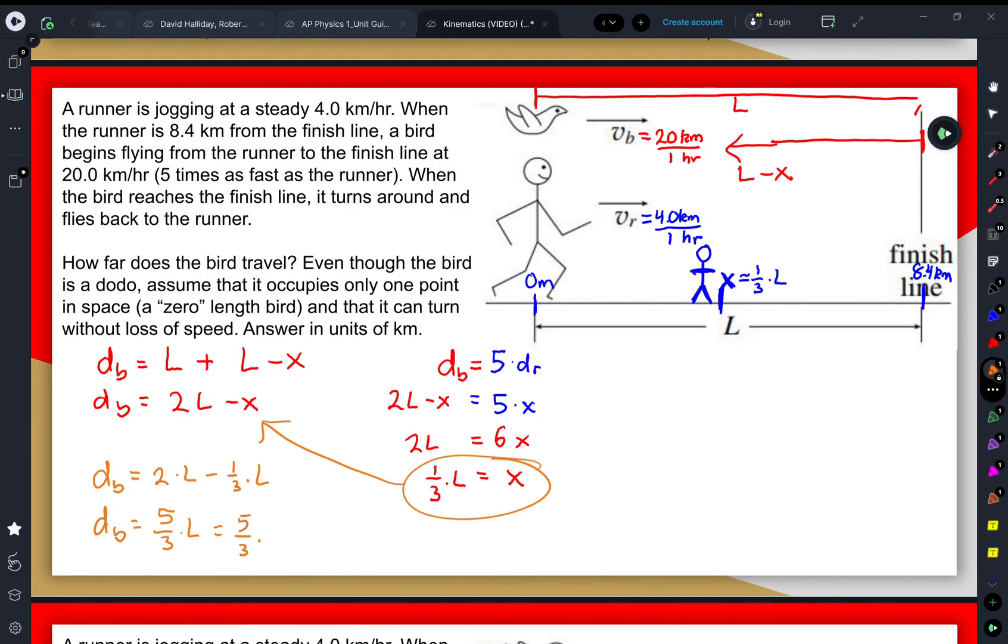If the total length is 8.4 kilometers, then five thirds times 8.4 would be 14 kilometers, which is the total distance traveled by the bird.